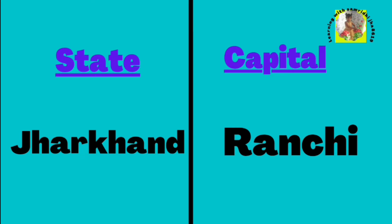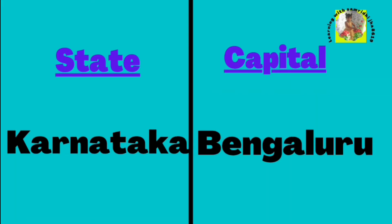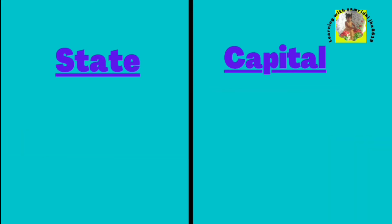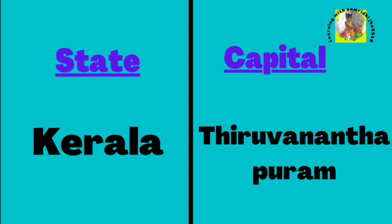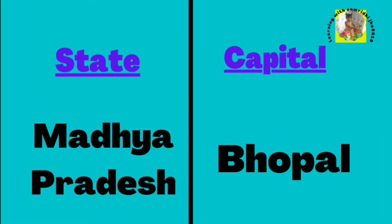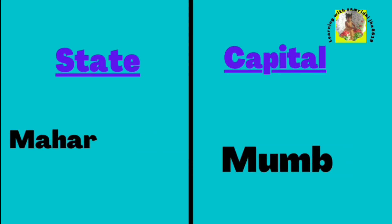Capital of Jharkhand is Ranchi. Capital of Karnataka is Bengaluru. Capital of Kerala is Thiruvananthapuram. Capital of Madhya Pradesh is Bhopal. Capital of Maharashtra is Mumbai.